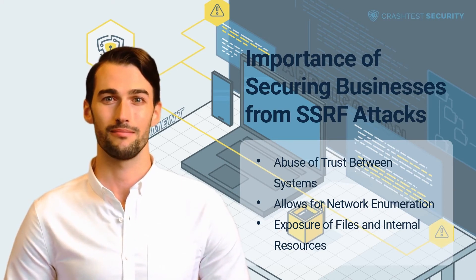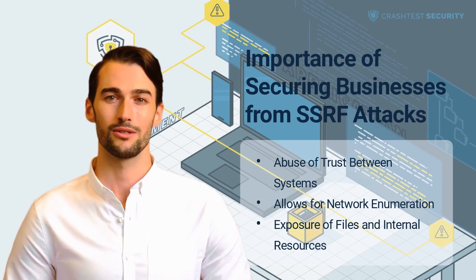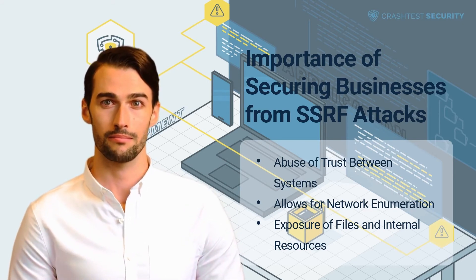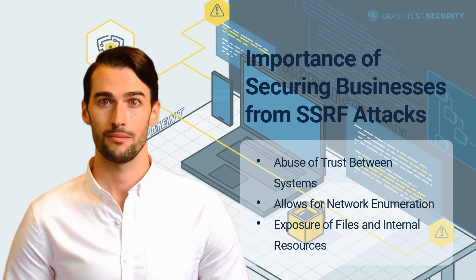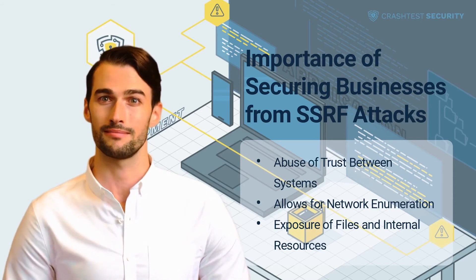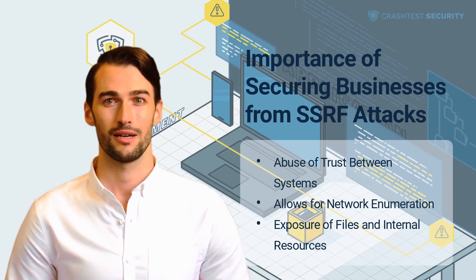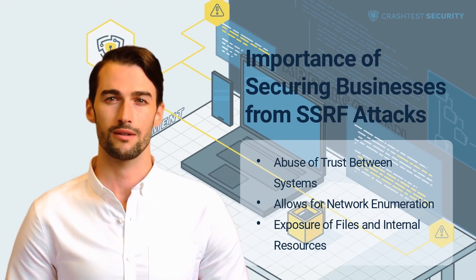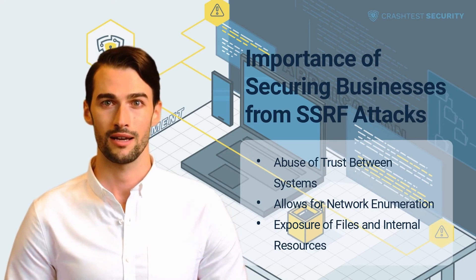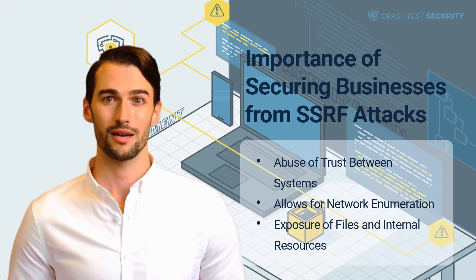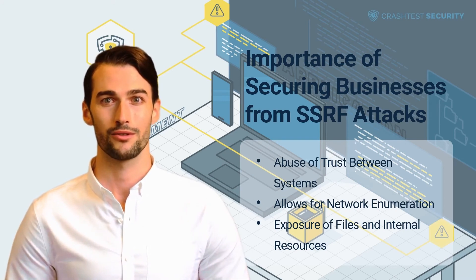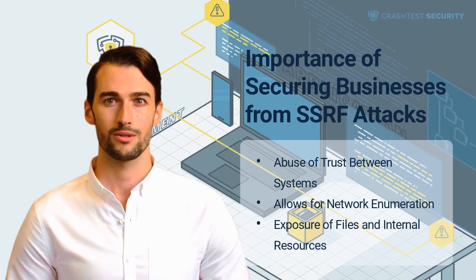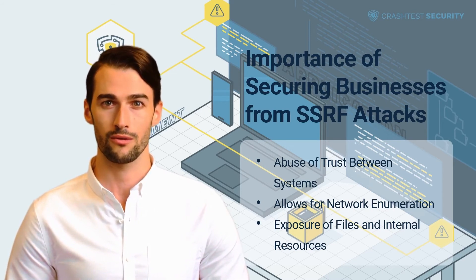Allows for network enumeration. Attackers use invalid requests to extract network information from error messages, service banners, and page load time to check for open ports and service availability. By executing different combinations of invalid requests, attackers interpret the behavior of the target server and exploit application functionality. Exposure of files and internal resources. Attackers use file, FTP, or Gopher schemas to map resources or read files from the host's local file system.